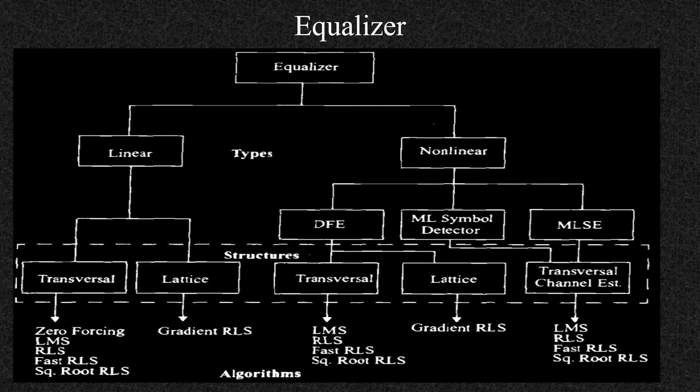For the lattice structure, gradient RLS is used. Then for the transversal ML symbol detector, the same algorithms are repeated: LMS, RLS, fast RLS, and square root RLS.